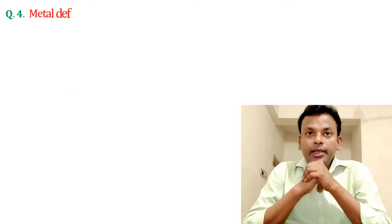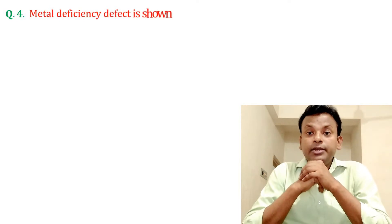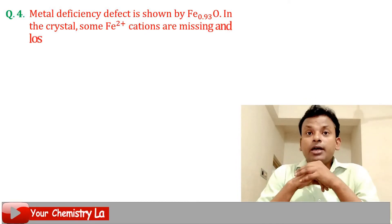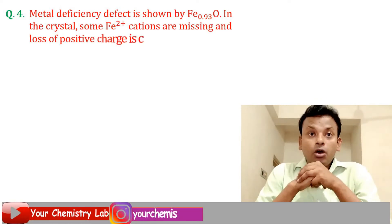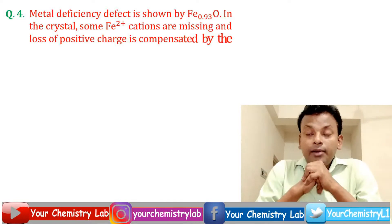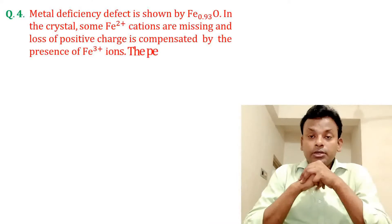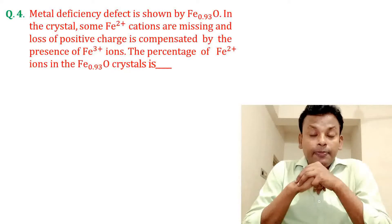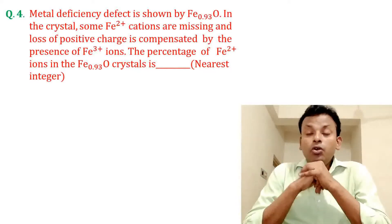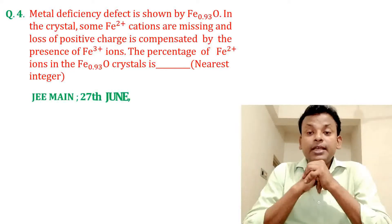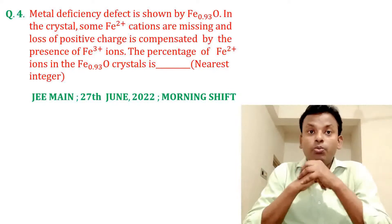Question 4. Metal deficiency defect is shown by Fe₀.₉₃O. In the crystal, some Fe²⁺ cations are missing and the loss of positive charge is compensated by the presence of Fe³⁺ ions. The percentage of Fe²⁺ ions in Fe₀.₉₃O is — (nearest integer). This question was set in JEE Main 27th June 2022 morning shift.